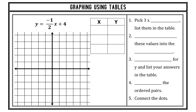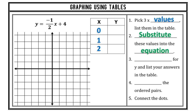We can also graph using tables. This is where leaving y and x as variables becomes very useful. In this case, we can pick three x values and list them in a table. I'm going to use 0, 1, and 2 — these are the x values we're going to substitute in.